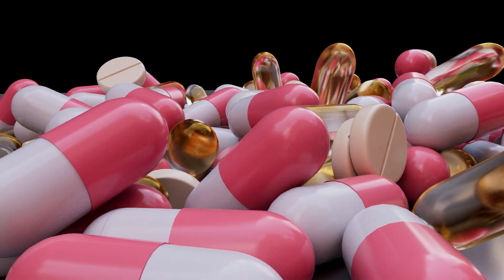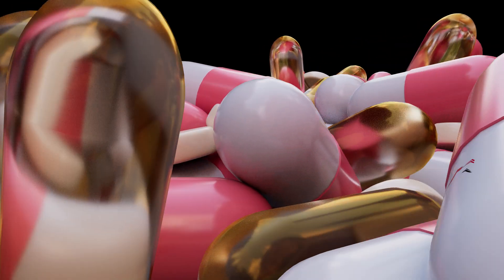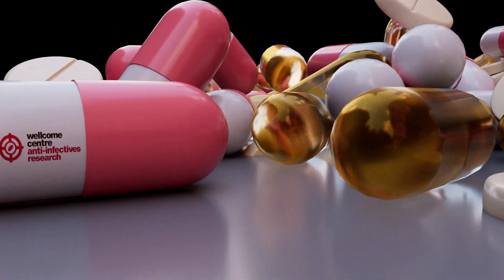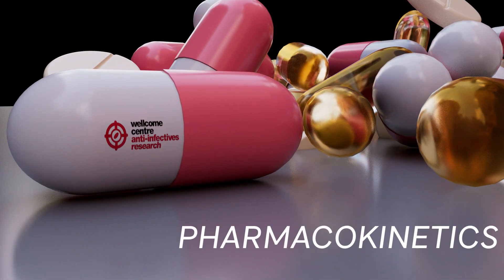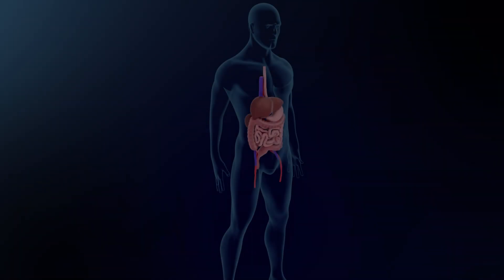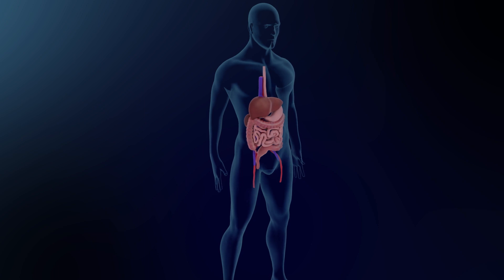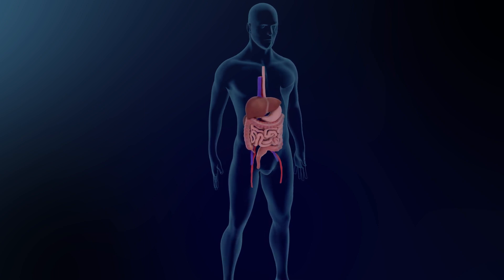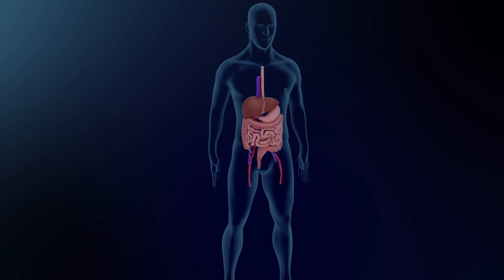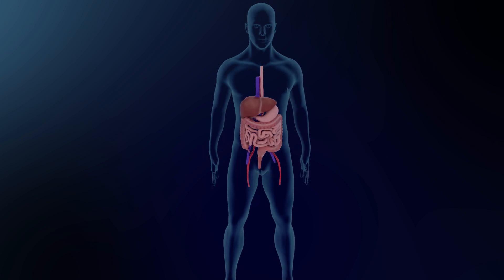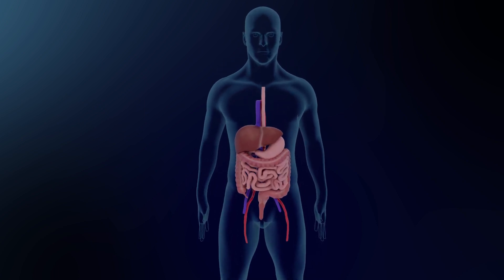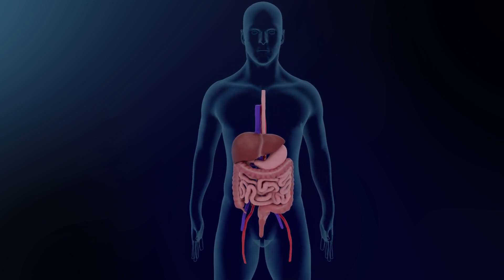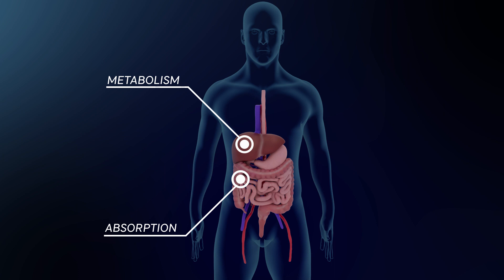There are several factors which can impact the therapeutic efficacy of a drug, such as pharmacokinetics. Pharmacokinetics refers to the biochemical processes a drug undergoes within the body, from its administration to its excretion. These can be divided into the following four stages: absorption, distribution, metabolism, and excretion.